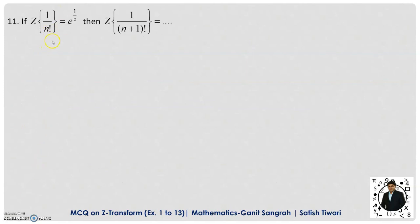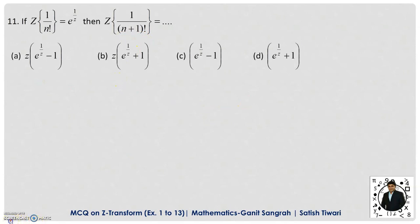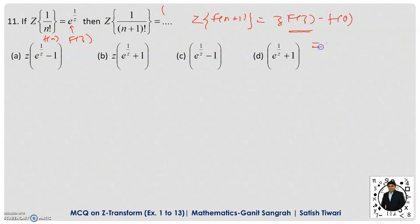Question 11: If Z{1/n!} = e^(1/Z), then Z{1/(n+1)!} is given by — we apply the shifting formula Z{f(n+1)} = Z·F(Z) − Z·f(0). Here f(n) = 1/n!, so F(Z) = e^(1/Z). We need f(0) = 1/0! = 1/1 = 1. Therefore Z{1/(n+1)!} = Z·e^(1/Z) − Z·1 = Z(e^(1/Z) − 1). Option A is correct.